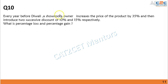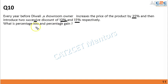Before Diwali, a showroom owner increases the price of a product by 35%, then introduces two successive discounts of 10% and 15% respectively. What is the percentage loss or percentage gain?